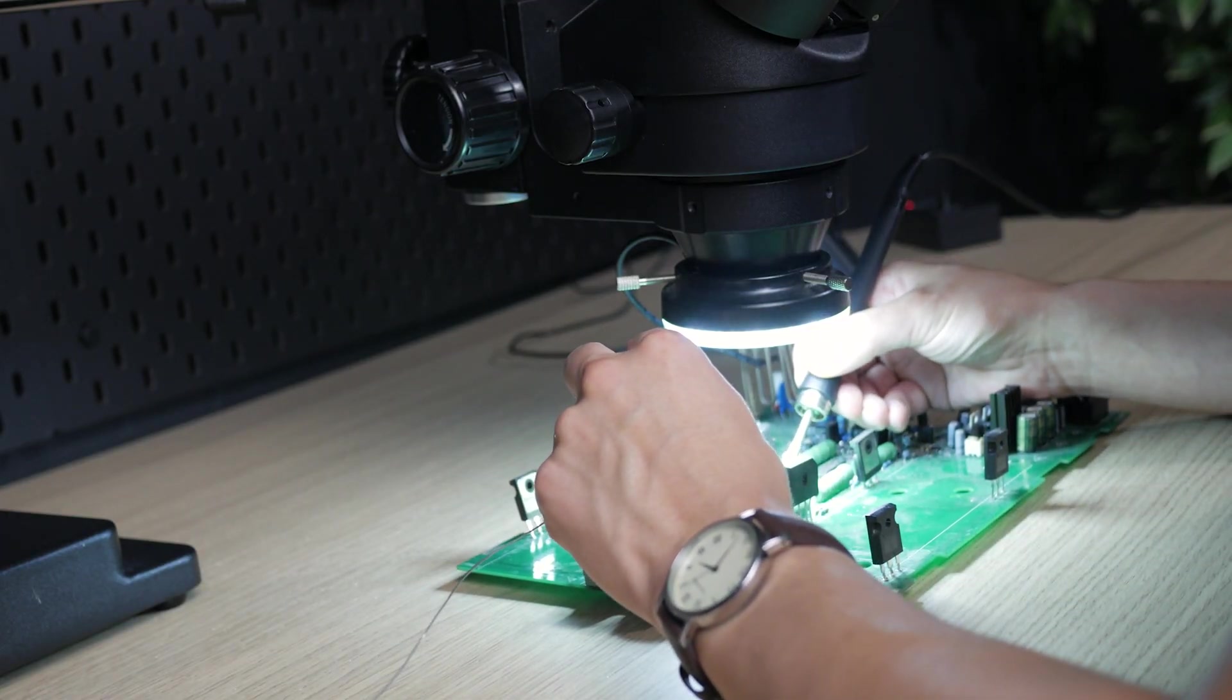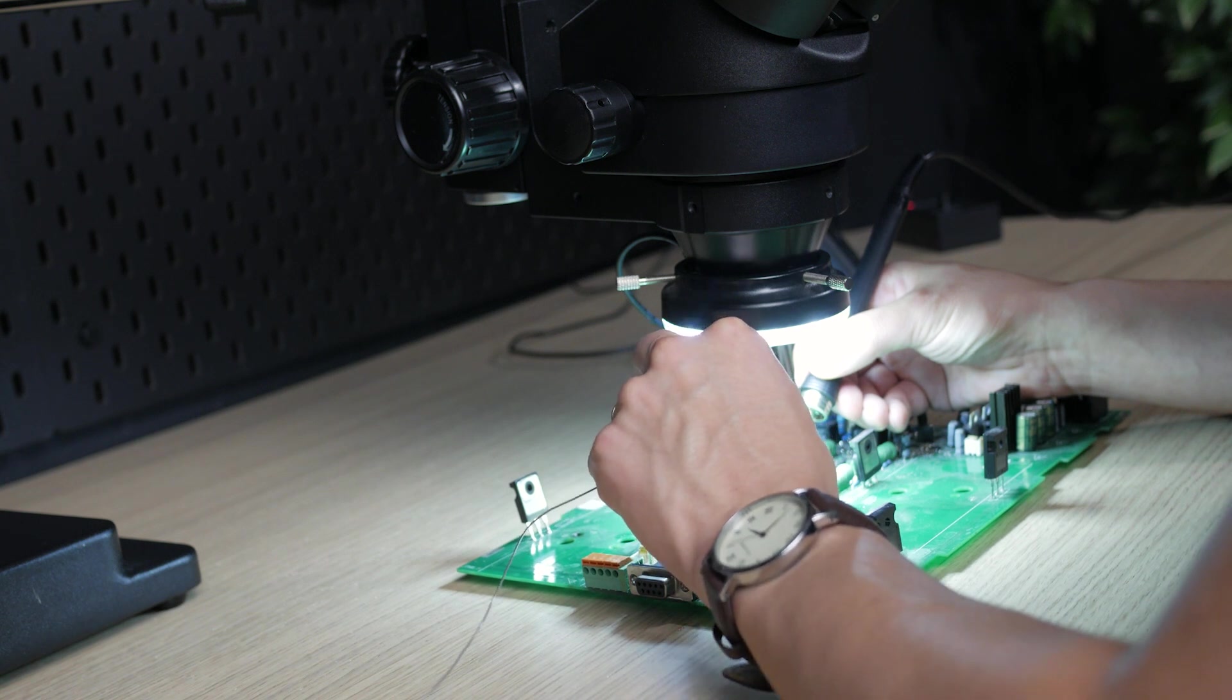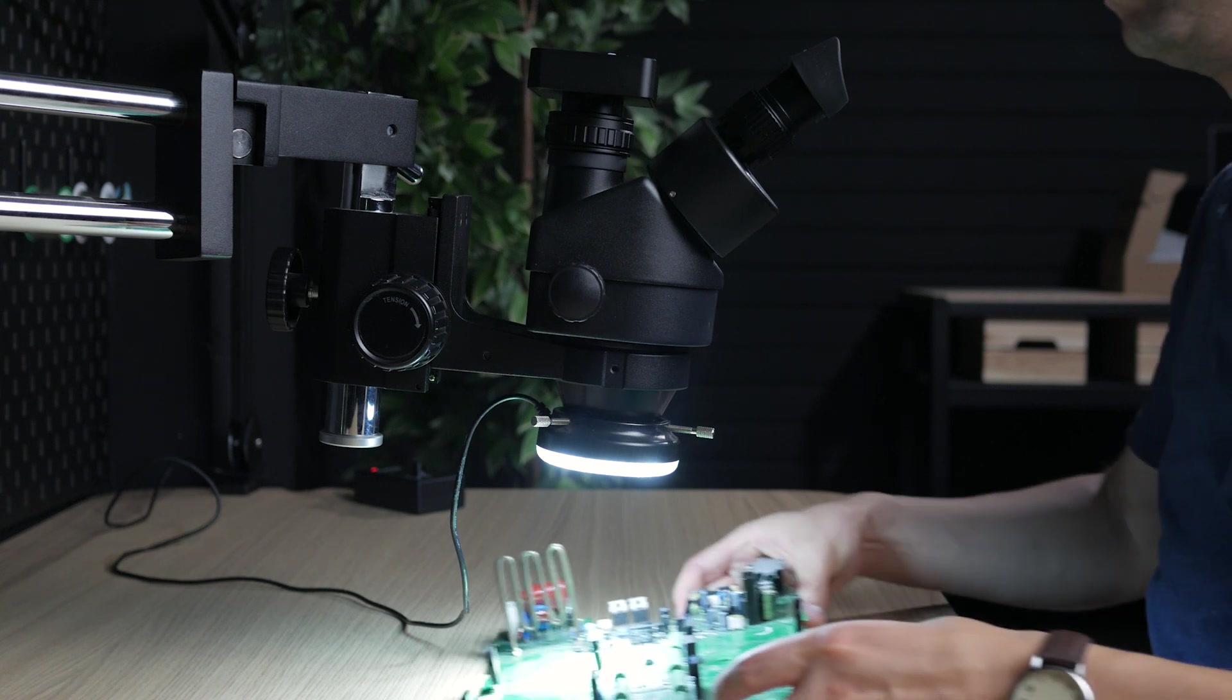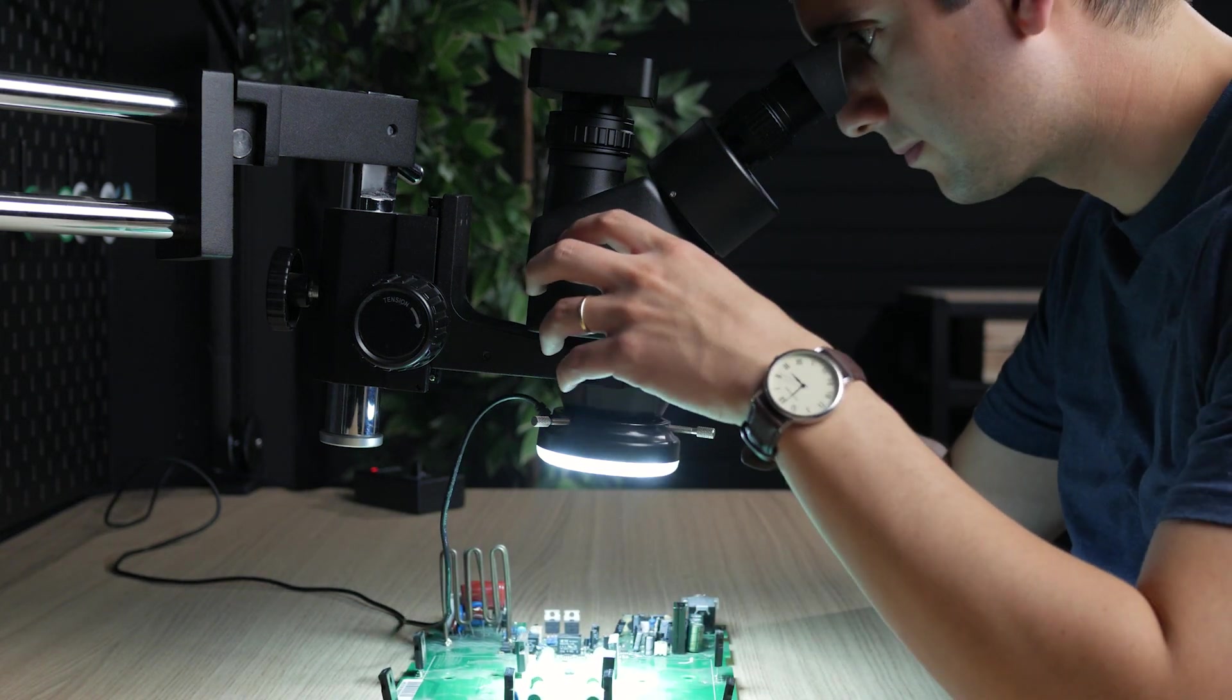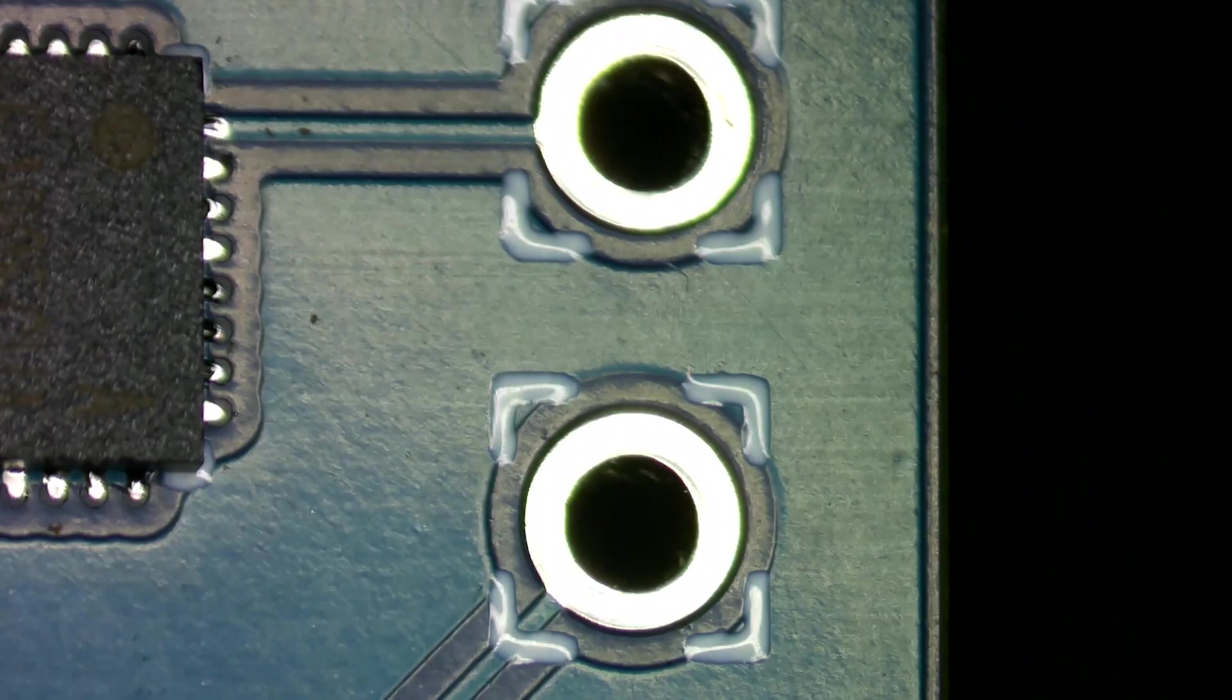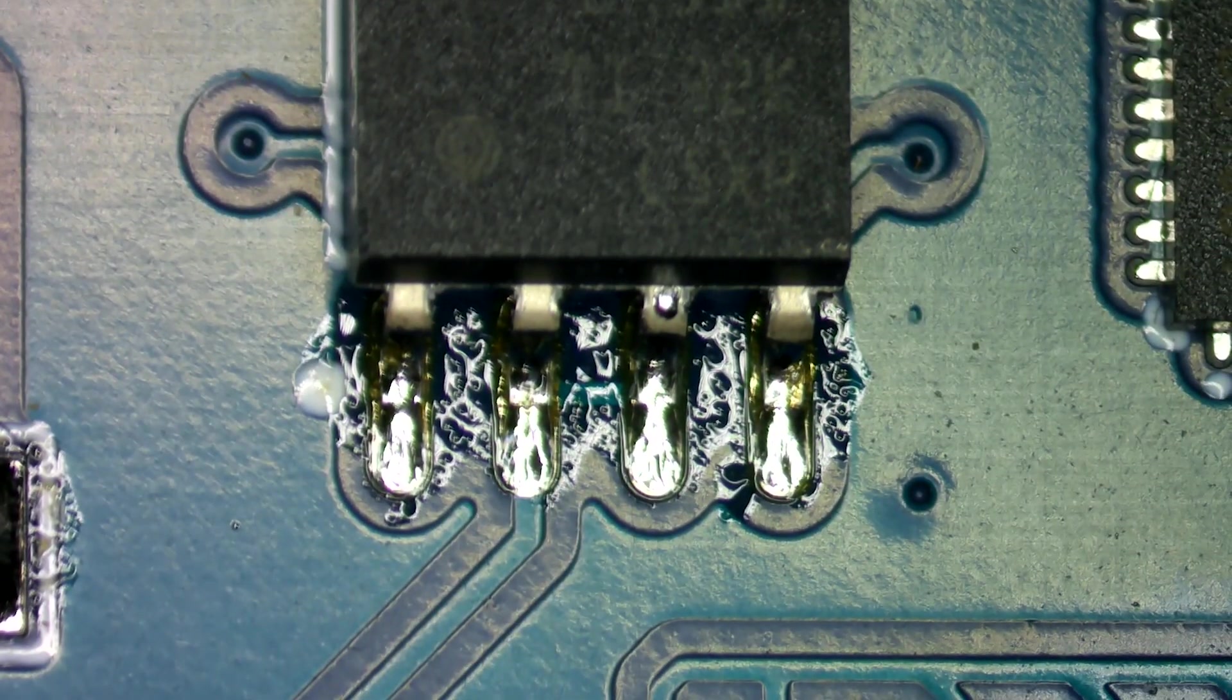They do take up significantly more space and you might need to get used to looking through the eyepieces. Also additional accessories such as different eyepieces, light rings, adapters and cameras for recording come separate. However stereo microscopes have a larger workspace and the three-dimensional image will make practical work but also inspection faster and easier to do.